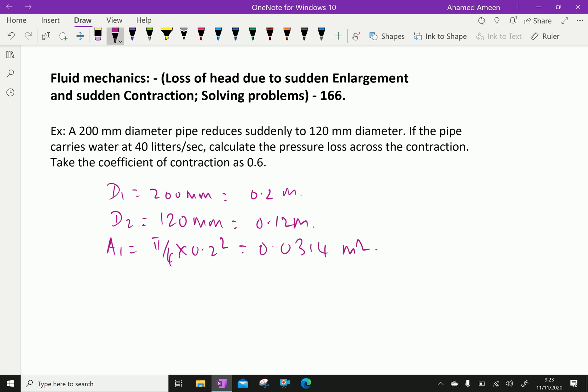And smaller area equals pi by 4, 0.12 square, which is equal to 0.0113 meter square.